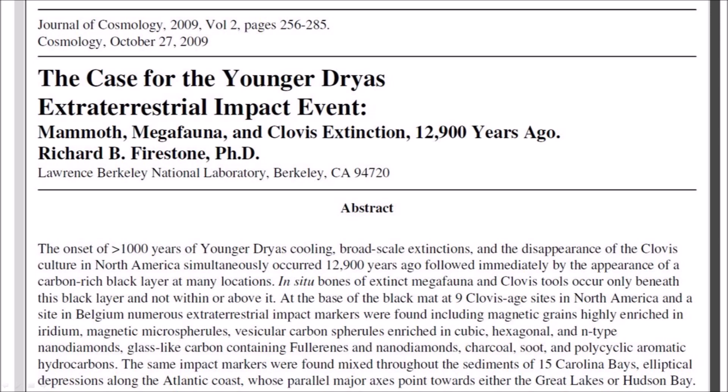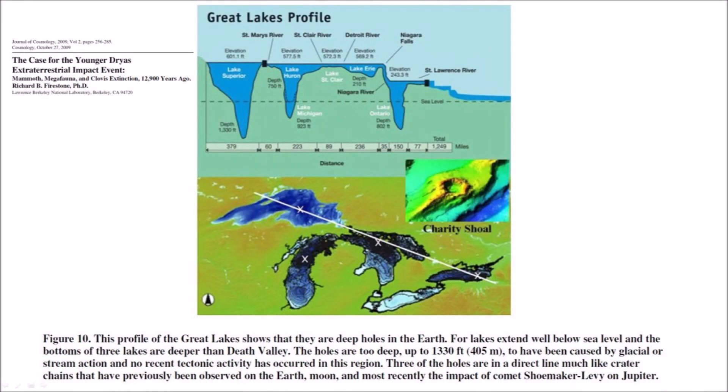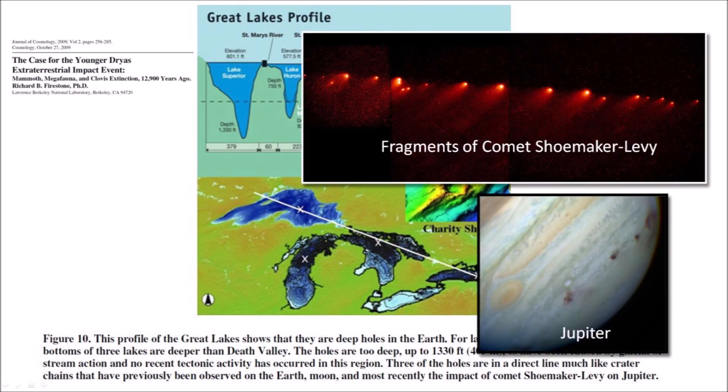Richard Firestone published a paper in 2009 titled 'The Case for the Younger Dryas Extraterrestrial Impact Event: Mammoth, Megafauna and Clovis Extinction, 12,900 years ago.' The paper presents several types of evidence claiming to support one or more extraterrestrial impacts or airbursts over North America. In Figure 10, Firestone states that the Great Lakes are deep holes in the earth that extend well below sea level, and mentions that three of the holes are in a direct line, much like the crater chains previously observed on the earth, moon, and the impact of Comet Shoemaker-Levy on Jupiter. The inset shows a Hubble Space Telescope image of the fragments of Comet Shoemaker-Levy aligned in a row — each fragment collided with Jupiter and left a black spot as the planet rotated.